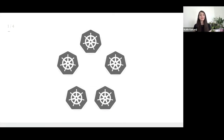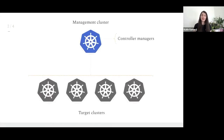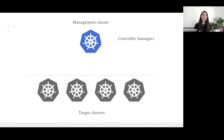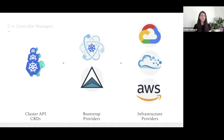Let's look at how Cluster API works. Suppose you'd like to provision a set of clusters in different regions across different cloud providers. The first step is to provision a management cluster. For testing, it is recommended to use Kind — a dockerized version of Kubernetes that is lightweight and can run on your local machine. For production, a fully fledged Kubernetes cluster is recommended for its more sophisticated failover mechanism. Once the management cluster is up and running, you'll need three sets of controller managers installed: one for Cluster API CRDs, one for the bootstrap provider, and one for the infrastructure provider.